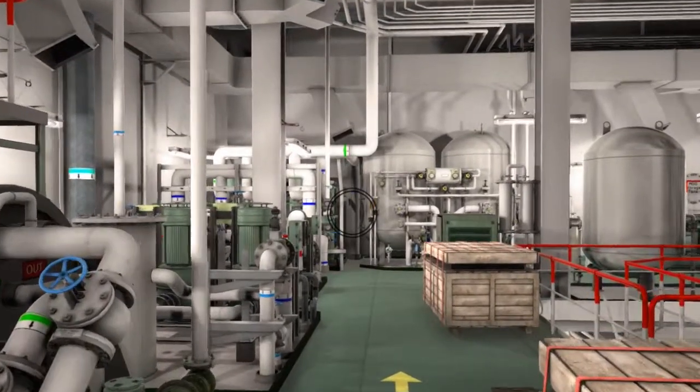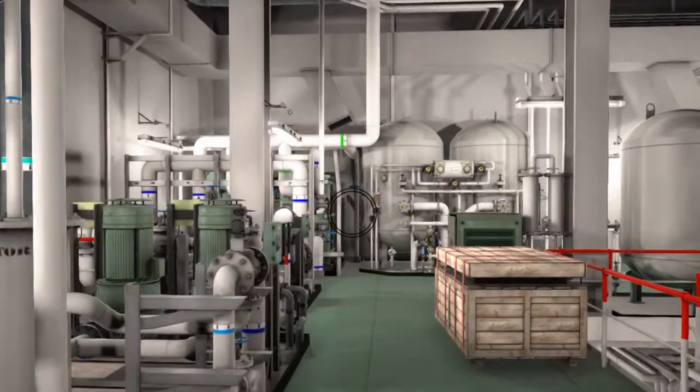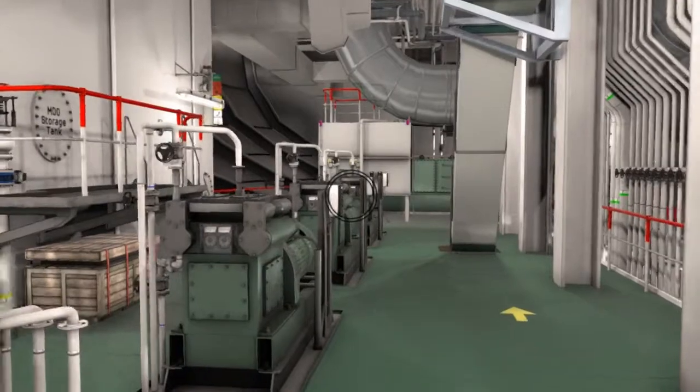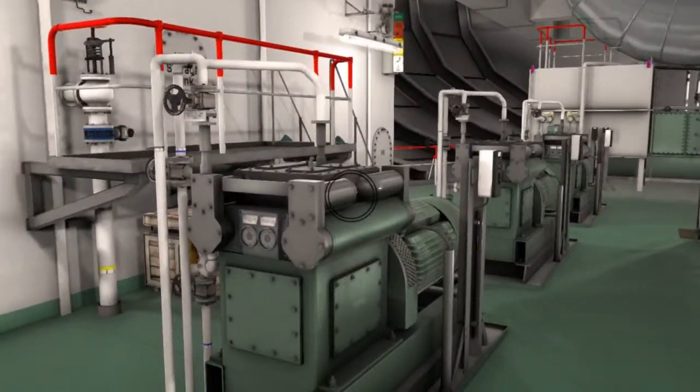The system compressors are located on the second floor near the fresh water generator of the engine room. The main air compressors are installed for delivery of compressed air to two main air receivers and one auxiliary air receiver.